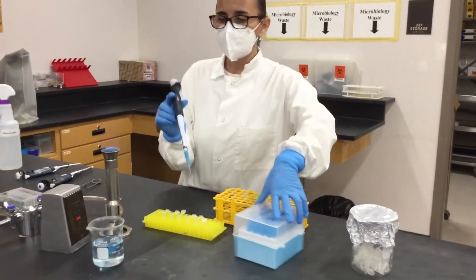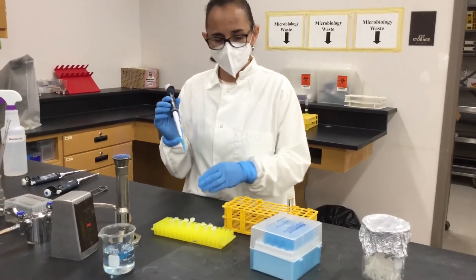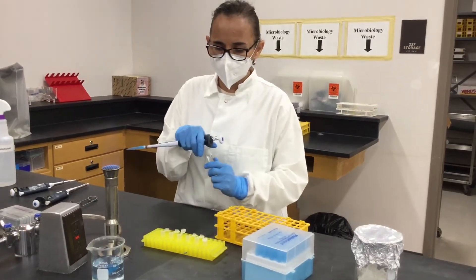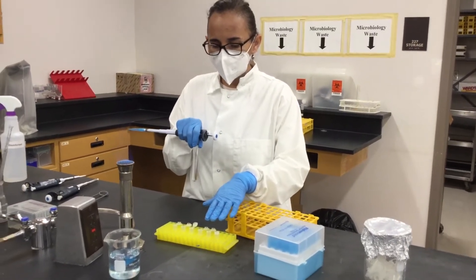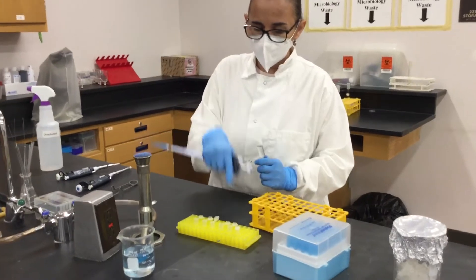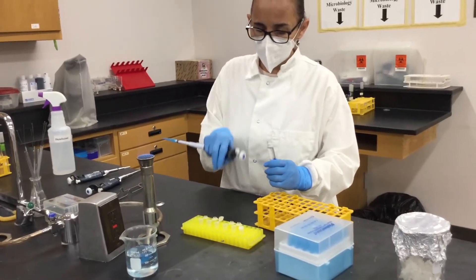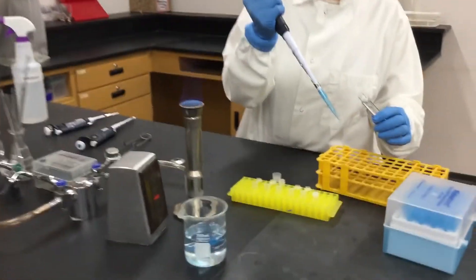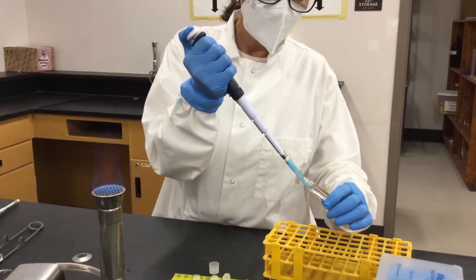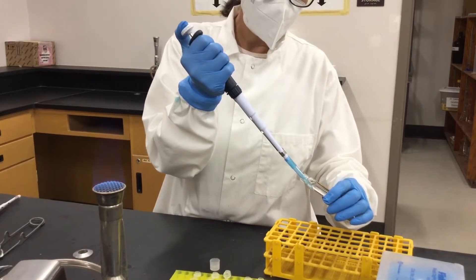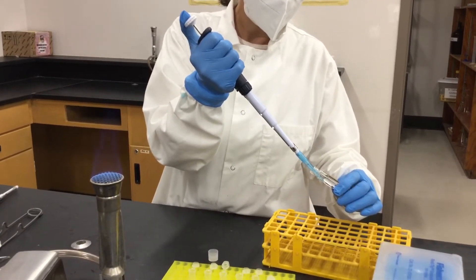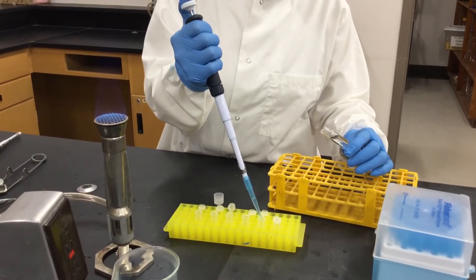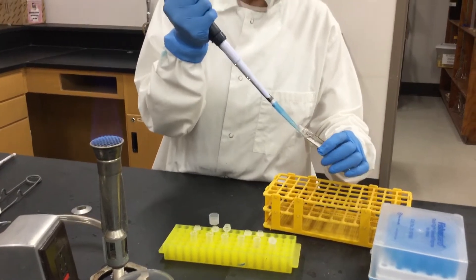We will be using 990 microliters of sterilized water in the first tube. These are microcentrifuge tubes, so we have five. To the first two I'm going to add 990 microliters of water. You press the plunger until the first stop, grab your water carefully by releasing the plunger little by little, and then add it into your first two tubes.